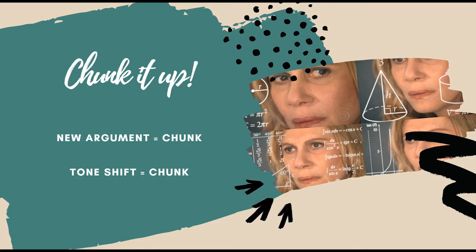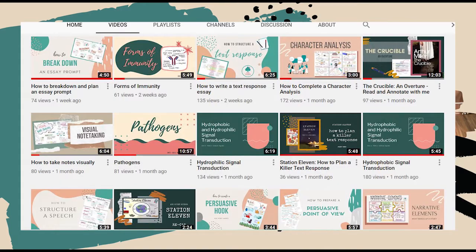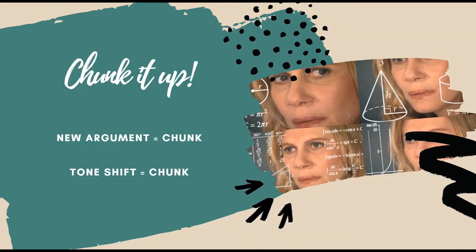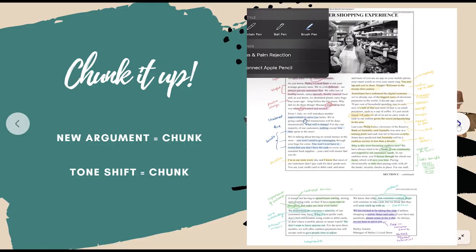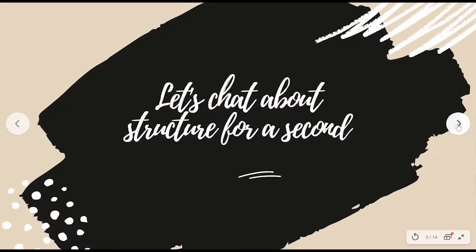Once you have your chunks organized, you should critically analyze them by zooming in — focusing on language and argument and how they work together. We unpack this further in another video on our YouTube channel, so be sure to check it out. One of the hardest things to do is to zoom out and look at the cumulative effect of the article, so let's look at how we do it.